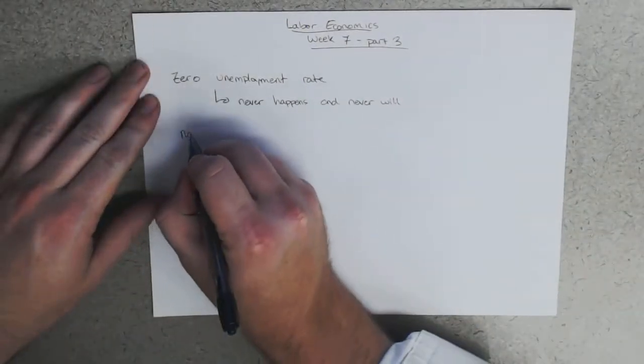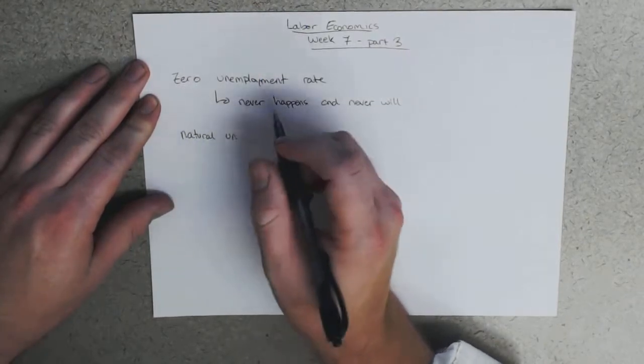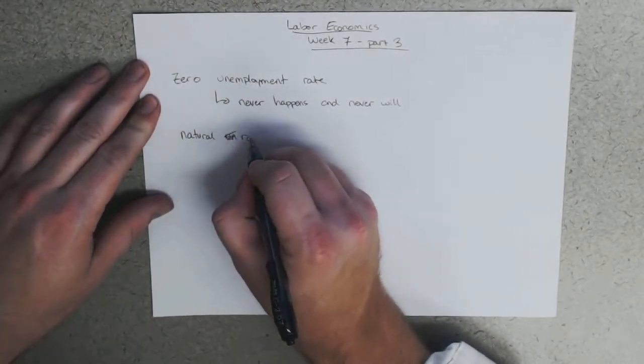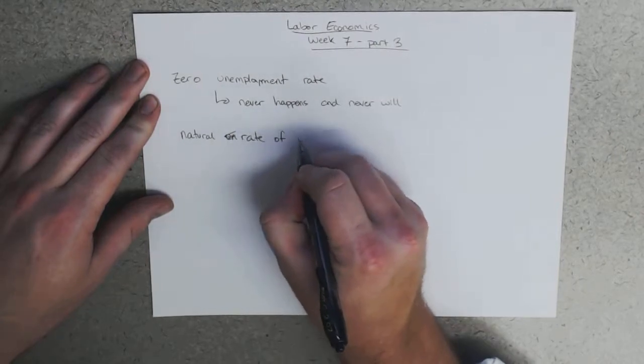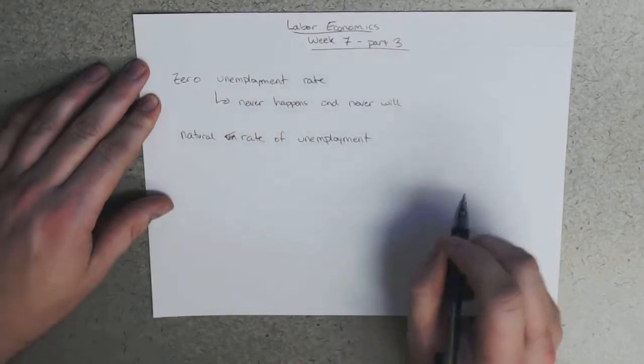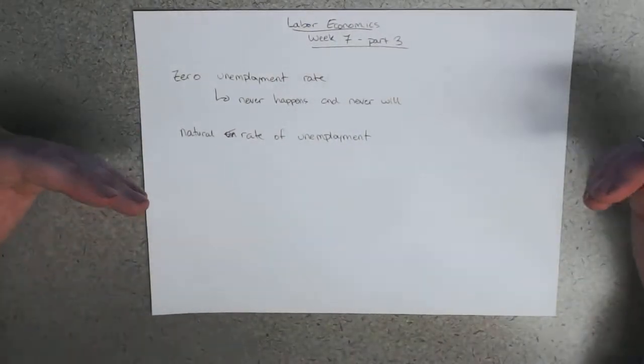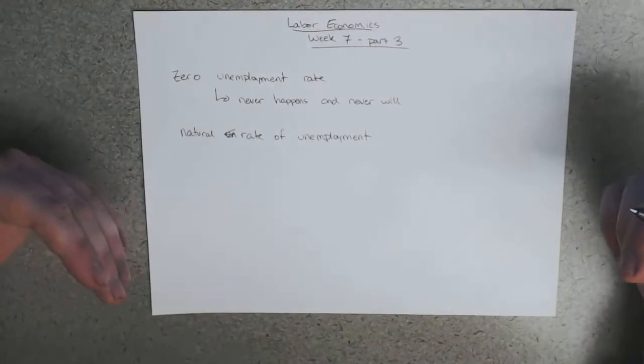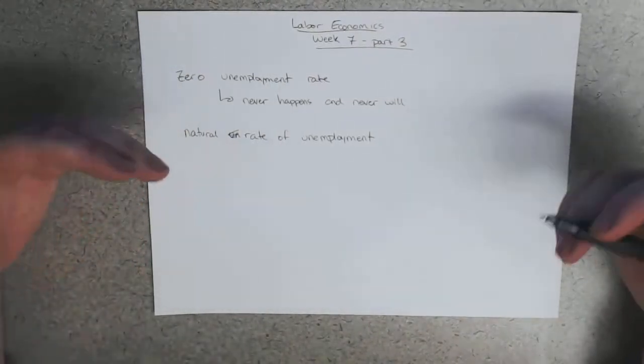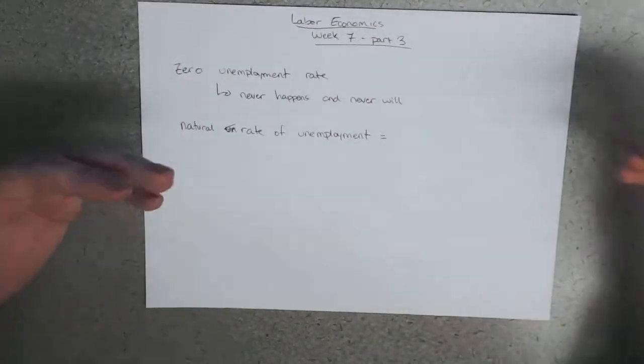So typically what we call the natural unemployment rate, the natural rate of unemployment, is the rate of unemployment we can sort of expect if everything is going well.